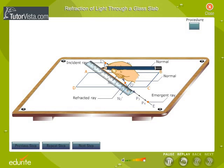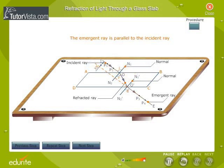Extend O-E backwards. We observe that the emergent ray is parallel to the incident ray.